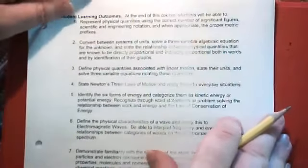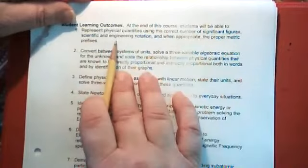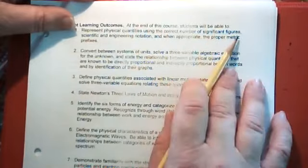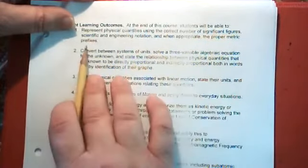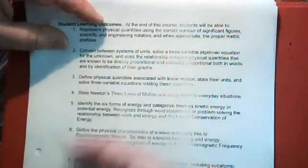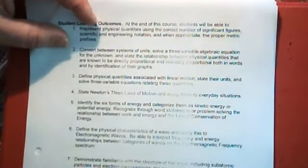Okay, some of the student learning outcomes, things that you're going to be expected to learn in the class, would be things like basic calculation skills in science, like significant figures, or in scientific notation. The metric system you should, you know, will be expected to use and be able to do unit conversions in the metric system.